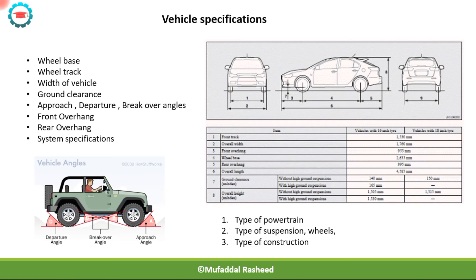Ground clearance is the clearance between the lowest point of the vehicle and the ground. For off-road vehicles, this is generally higher, while for sports cars it is very low.